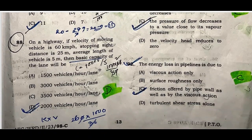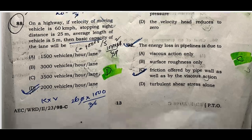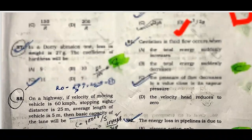Question eighty-eight: On the highway, if the velocity of a moving vehicle is 60 km per hour, stopping sight distance is 25 meters, and the average length of the vehicle is 5 meters, then the basic capacity is 2000 vehicles per hour per lane.